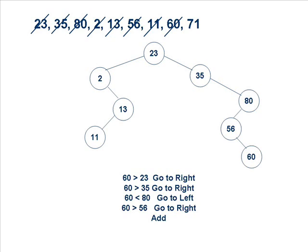The next number is 60. Keeping in mind the rules we have been following, we start comparing with the root node 23 — smaller, move right. 35 is smaller than 60, move further right. 80 is larger than 60, so we move to the left hand side of 80. We find another node there with value 56. We compare 60 with 56 and place 60 as the right child of 56.